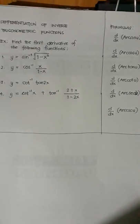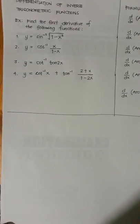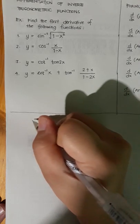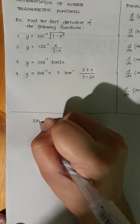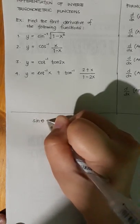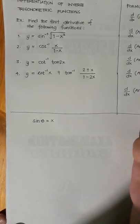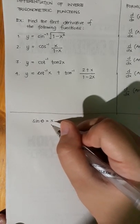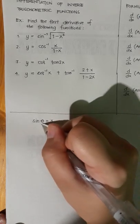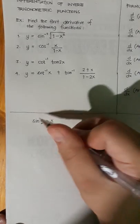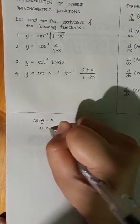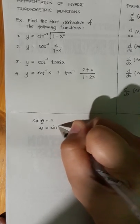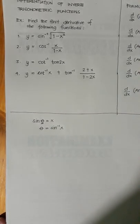We will now discuss differentiation of inverse trigonometric functions. You just have to remember the basics: if we have a trigonometric function of a certain angle, say sine of a certain angle is equal to x, and our unknown is the value of the angle, then we have to do inverse trigonometry, wherein the angle theta is equal to the arc sine of x.